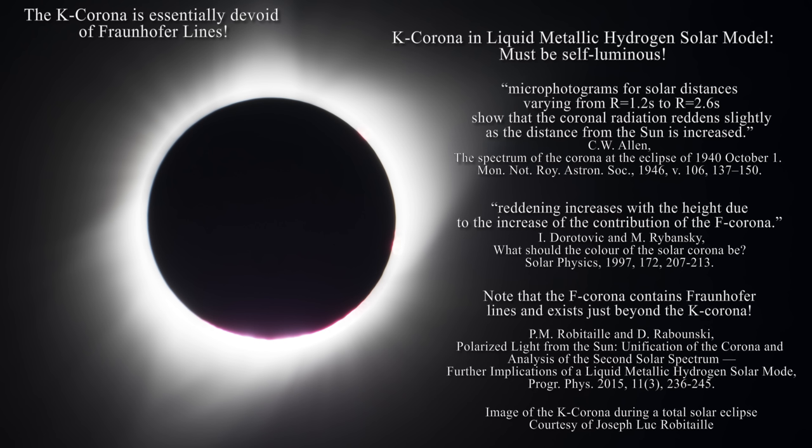The observation that Fraunhofer lines can be seen in the f-corona exposes errors in logic in the standard solar model relative to the k-corona. If relativistic electrons at the level of the k-corona can scatter photospheric light and eliminate most of the Fraunhofer lines, how could these same lines still be present in the more distant f-corona? Or how could we observe the Fraunhofer spectrum here on Earth? Clearly the corona is cooling with elevation — it is not at millions of Kelvin, as Zirin suspected long ago.